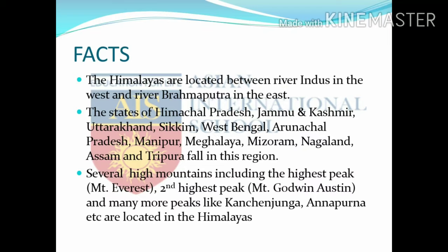Now we will discuss the facts of the Himalayas. The Himalayas are located between two rivers: River Indus in the west and River Brahmaputra in the east. The states of the Himalayas include Jammu and Kashmir, Uttarakhand, Sikkim, West Bengal, Arunachal Pradesh, Manipur, Meghalaya, Mizoram, Nagaland, Assam and Tripura, which fall in this region.